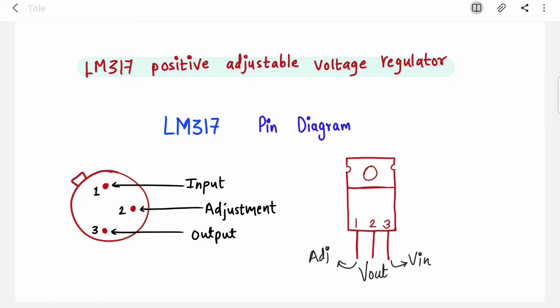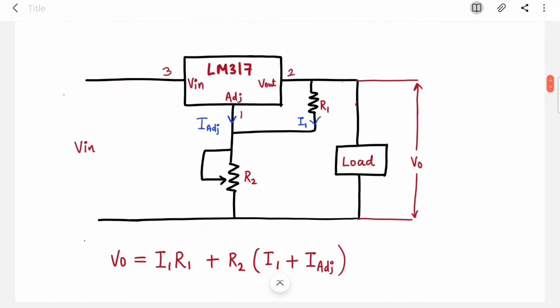Now let's see the connection diagram. To the adjustment pin you have connected a potentiometer, a variable resistor to change your output voltage. Then there is one fixed resistor between output and adjustment pin. To find the output equation, output is the voltage drop across R1 resistor and R2 potentiometer.